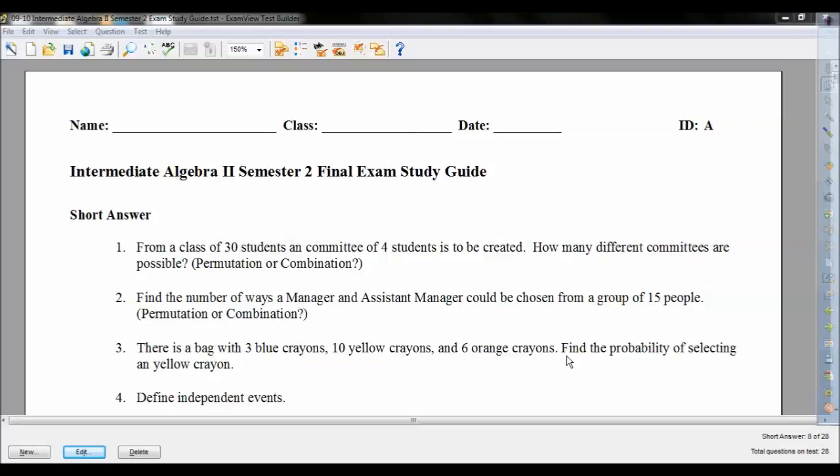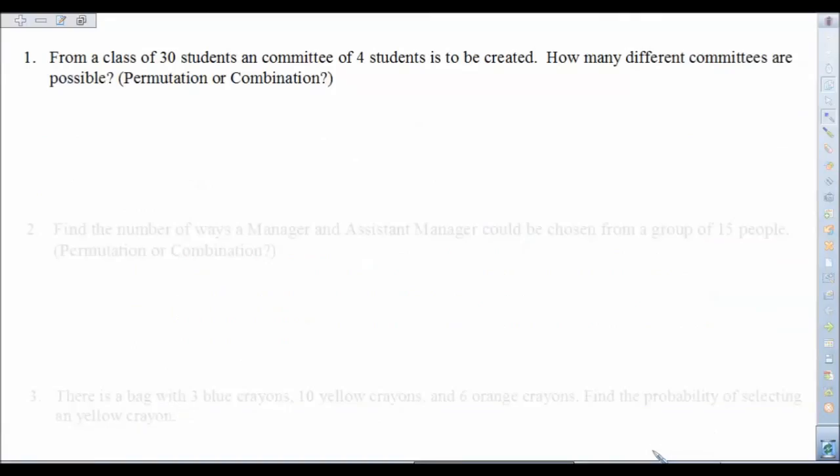So let's get right to it and let's just look at the first question. Okay, so the first question here, from a class of 30 students, a committee of four students is to be created, how many different committees are possible? So these questions here, as well as the second one, is checking to see if you know the difference between a permutation and a combination.